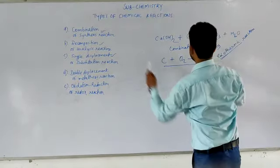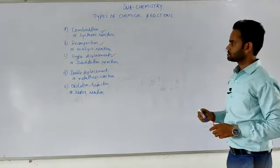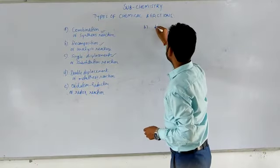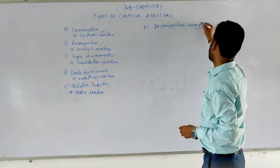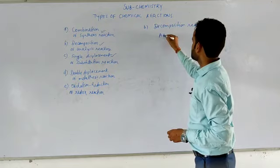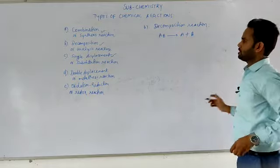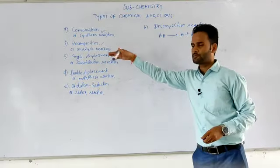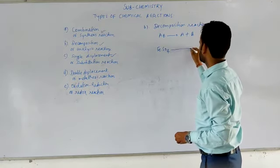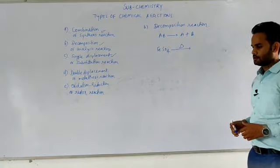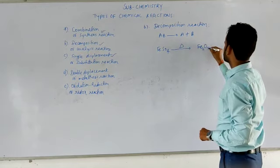Now we will talk about decomposition reaction, the second type of chemical reaction. Its general formula is AB, which splits up into its components A plus B. You can see it is the opposite of the combination reaction. We can take an example: if we give FeSO4 some activation energy in the form of heat, it breaks down into its simpler substances.